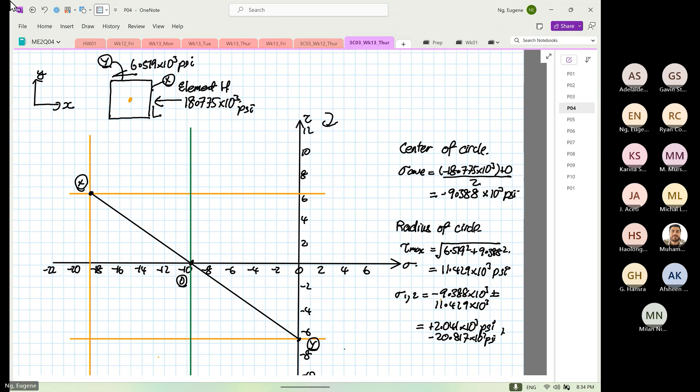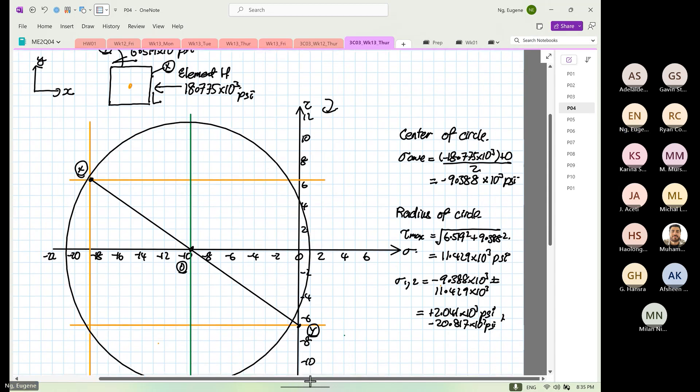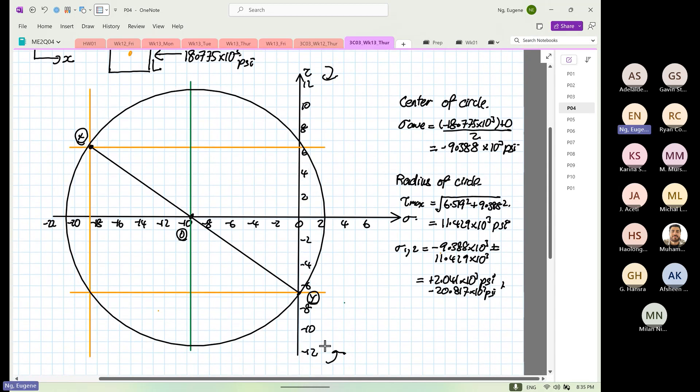So now we can construct our circle. Or if you have a compass, you can already construct your circle. So 20.8, and then we have 11.429. Somewhere around here. And then we bring it down. And then we have 2.041, and then we have 11.429. So this is our Mohr's circle.